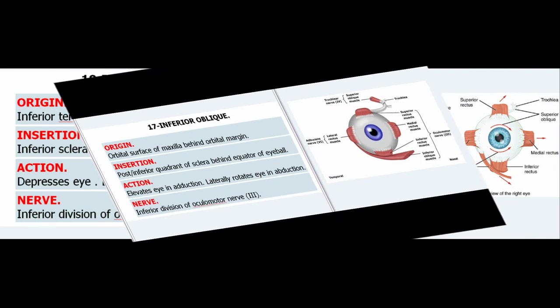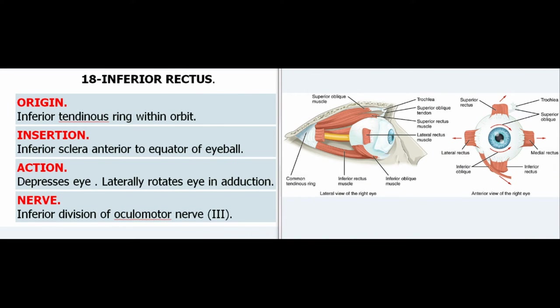18. Inferior Rectus. Origin: Inferior tendinous ring within orbit. Insertion: Inferior sclera anterior to equator of eyeball. Action: Depresses eye, laterally rotates eye in adduction. Nerve: Inferior division of oculomotor nerve (III).